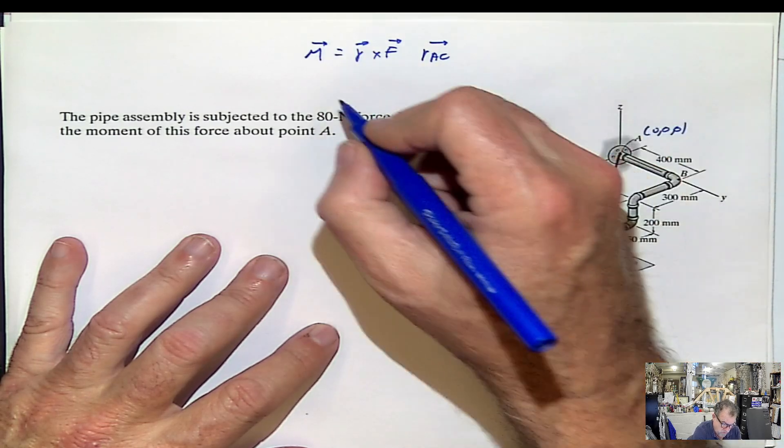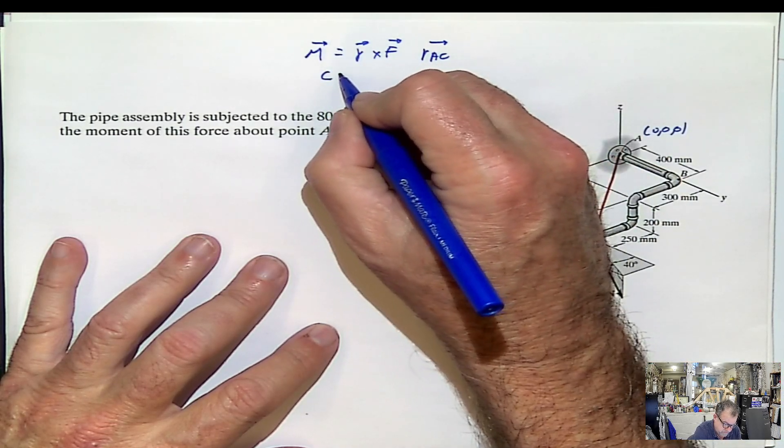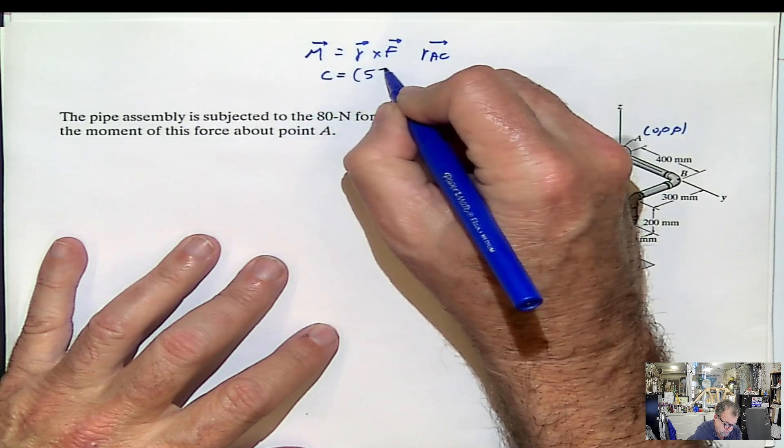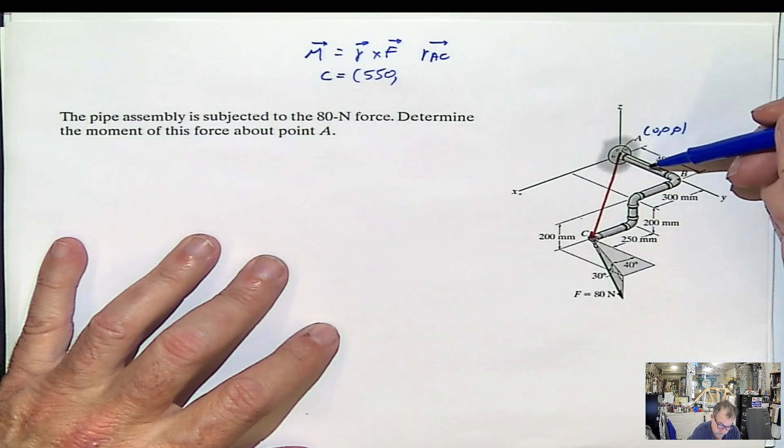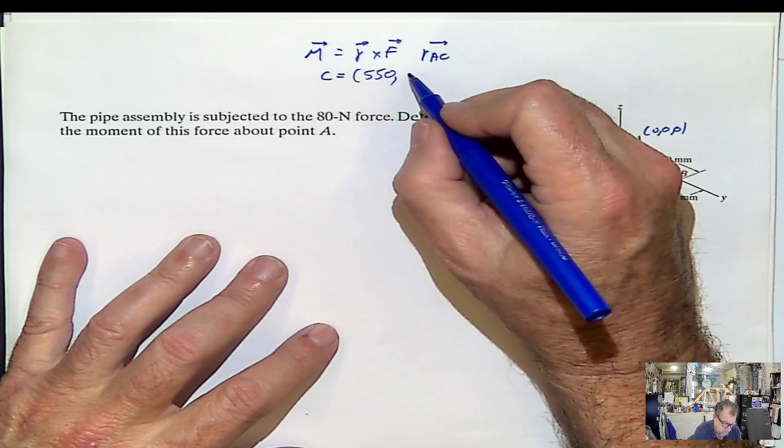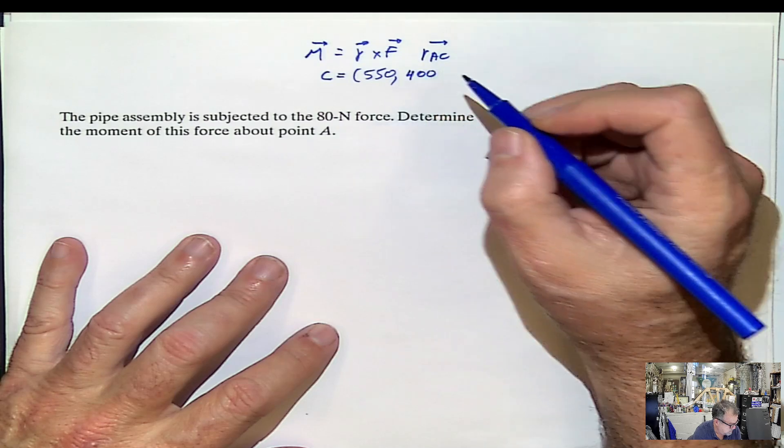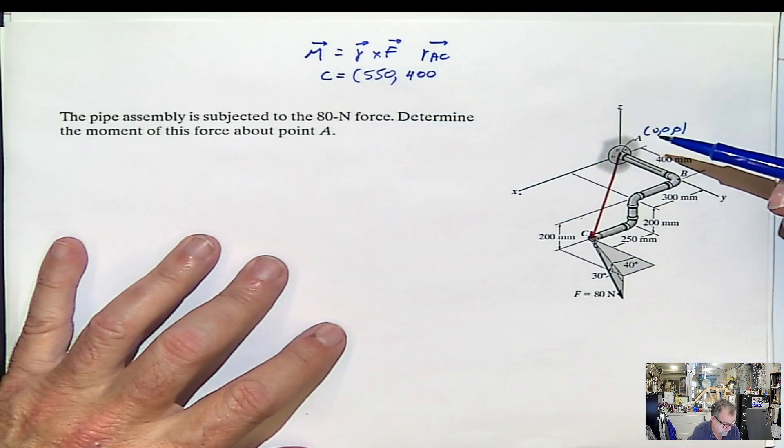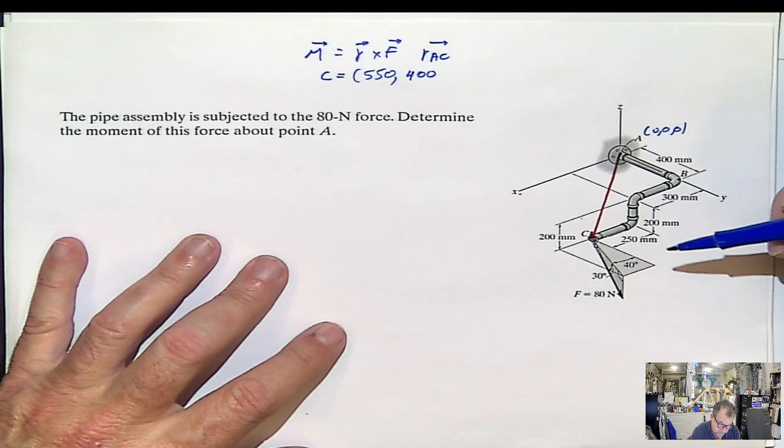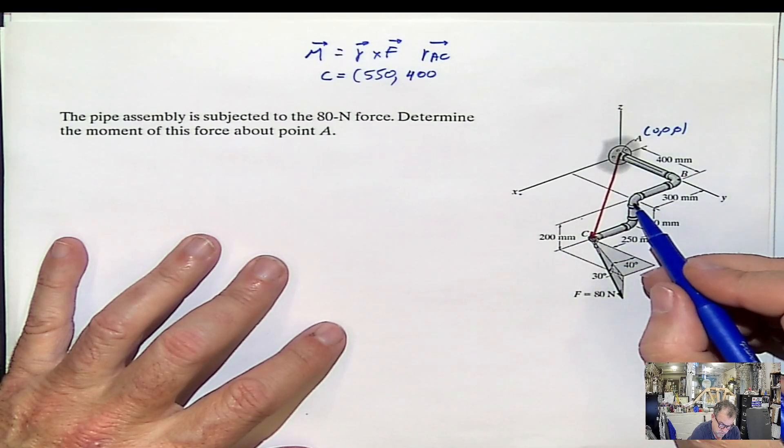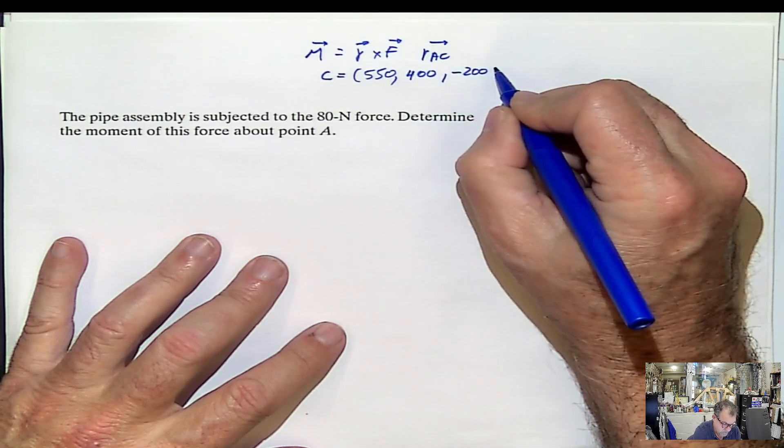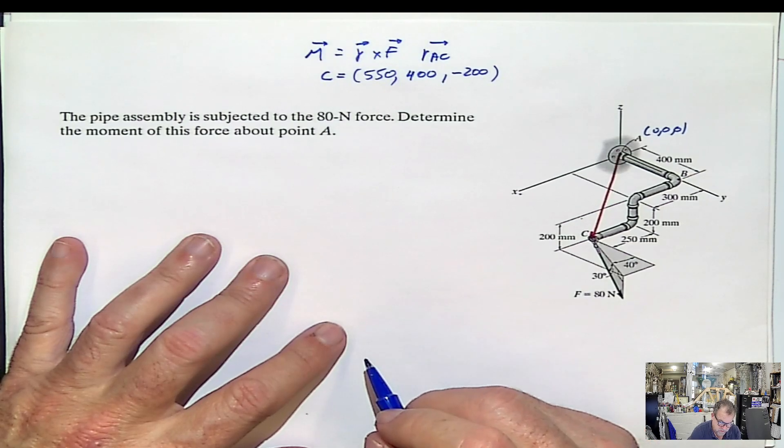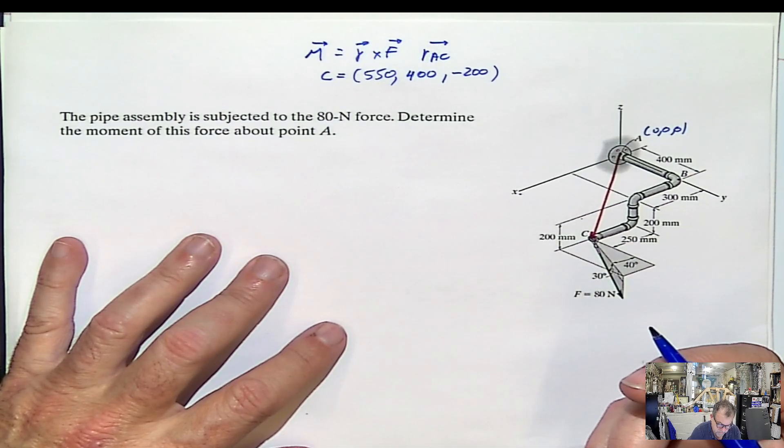In the y direction, it will be 400, because all of these lays in the same line, 400. And in the z direction now will be negative 200, negative 200. And this is millimeters. You can express it later on in meters if you want to.